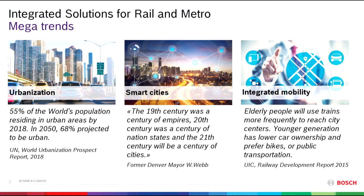In order to deal with increasing numbers of inhabitants, cities need to adapt, and within this process inner-city train connections are becoming more and more important. The third mega trend is integrated mobility: in the old days more people had cars, but nowadays more people are using alternative ways of transportation like bikes, car sharing, and public transport. All of these mega trends have a huge impact on how public transport will look in the future.